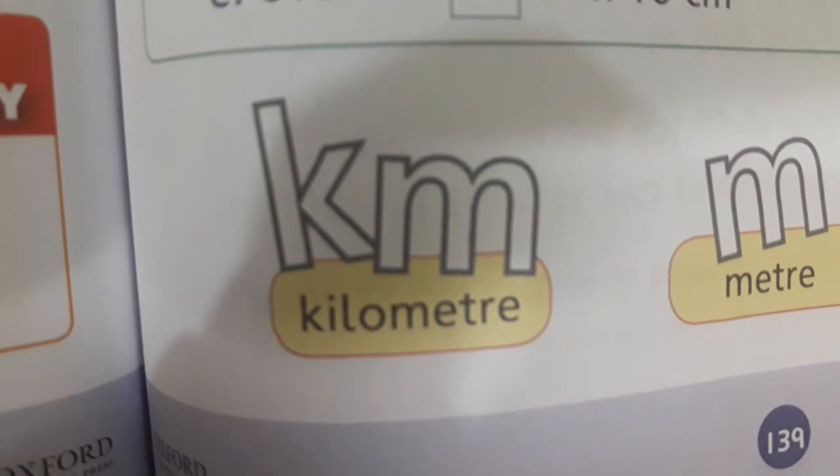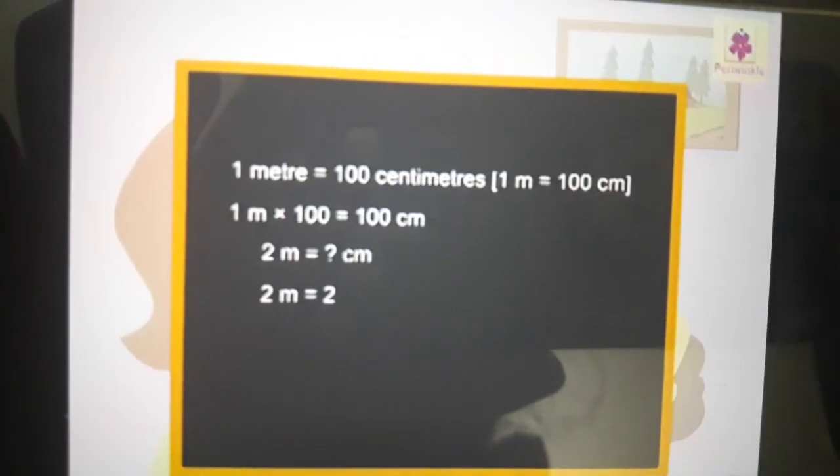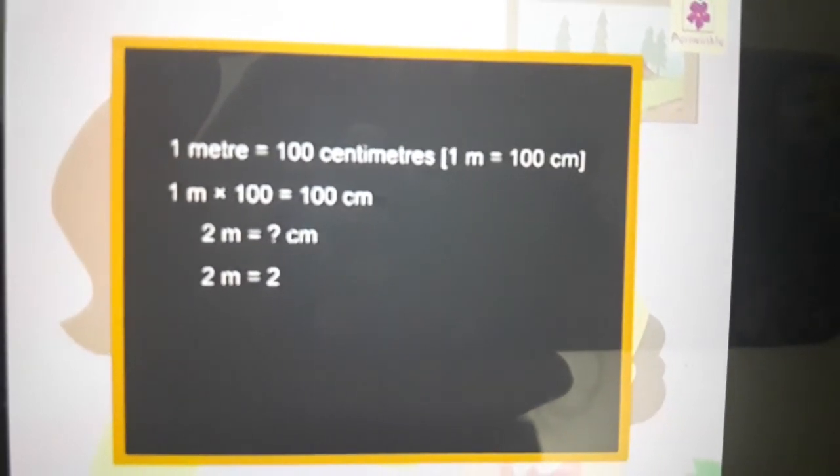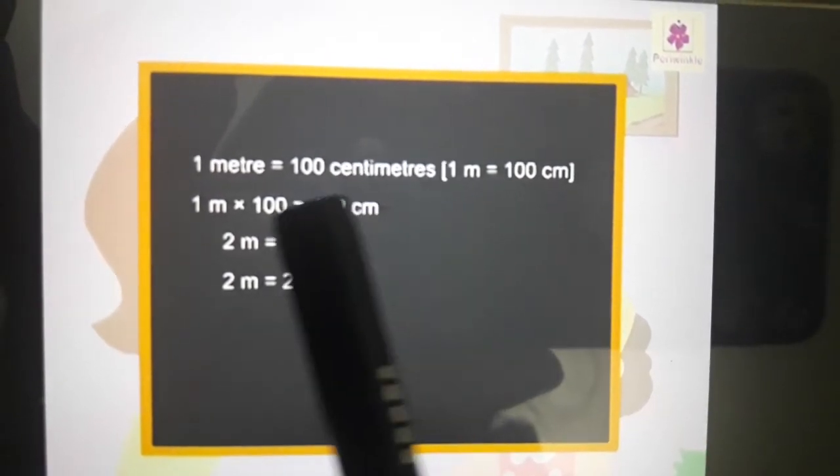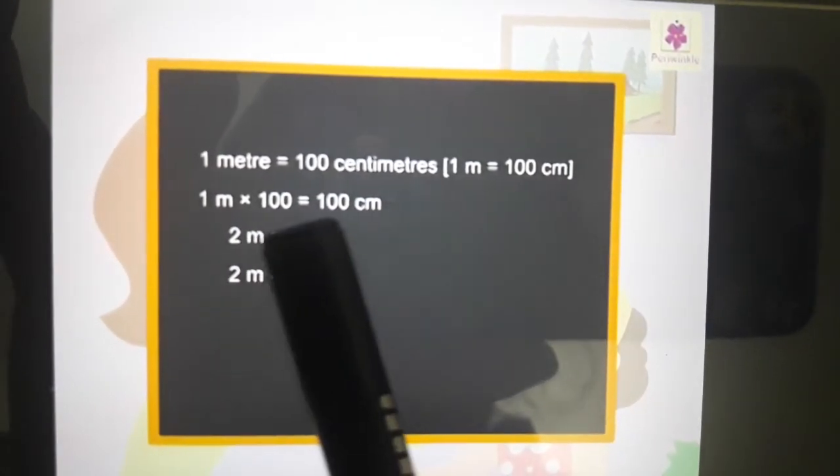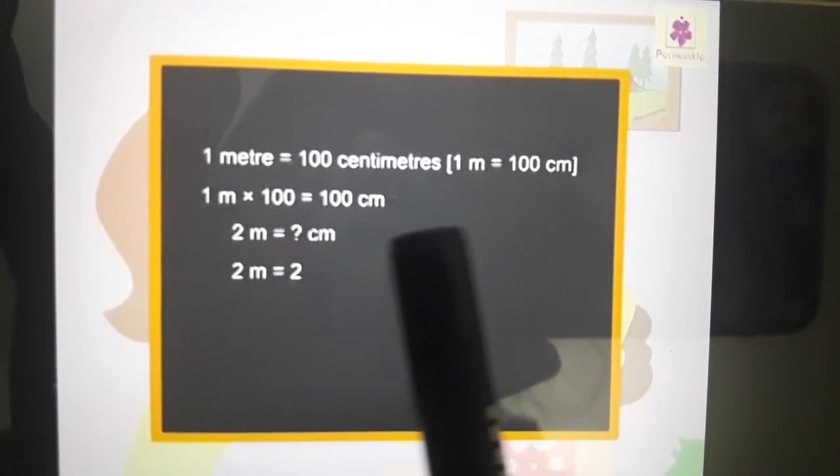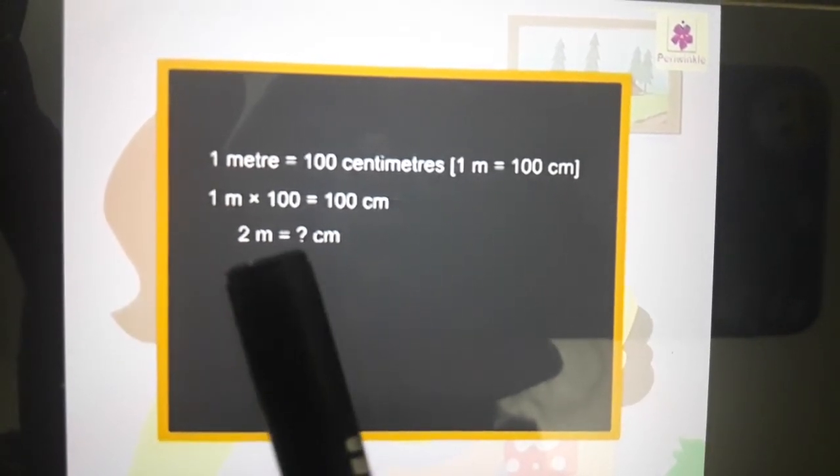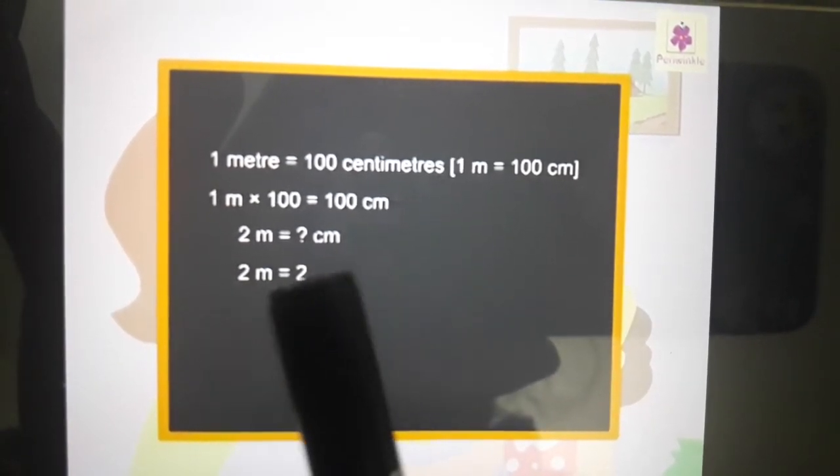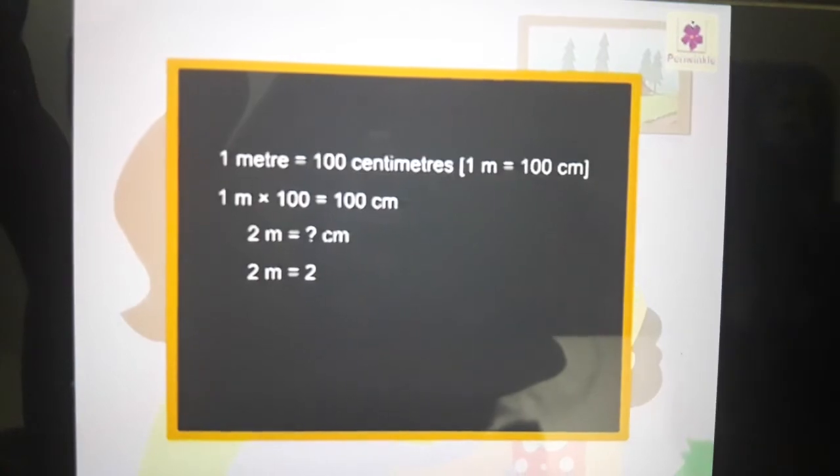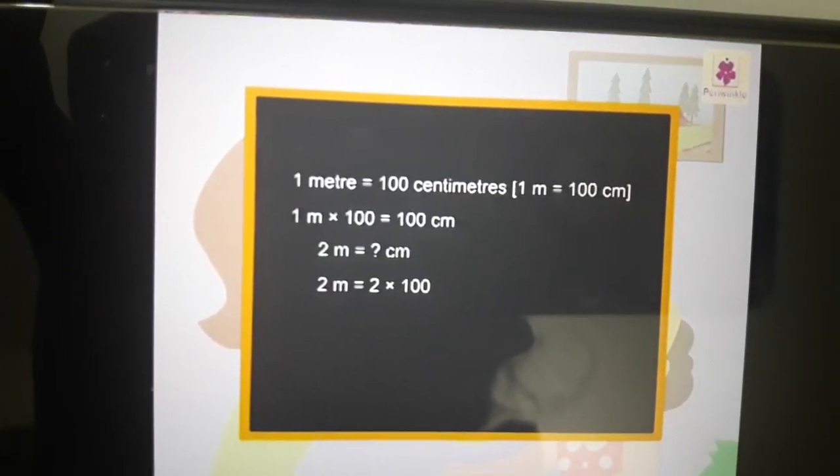Students, one meter equals 100 centimeters, and 1 m = 100 cm. So to make two meters, what we will do? We will multiply it: we will multiply 2 into 100.